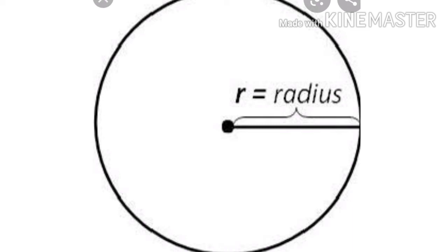Here, OA is a radius, OB is a radius, OC is a radius. So the circle has an infinite number of radii — radii is the plural of radius. The lengths of all radii of a circle are equal.